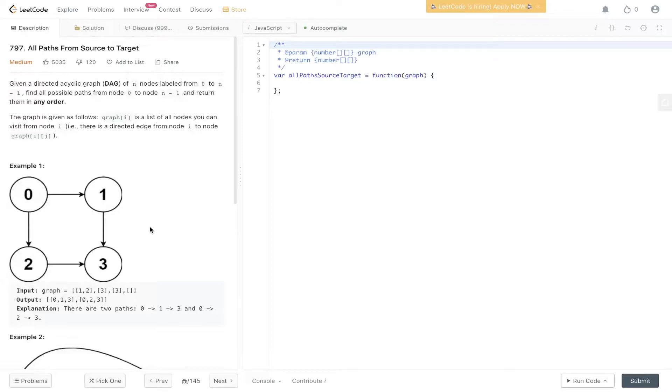The graph is given as follows. Graph i is a list of all nodes you can visit from node i. There is a directed edge from node i to node graph ij.